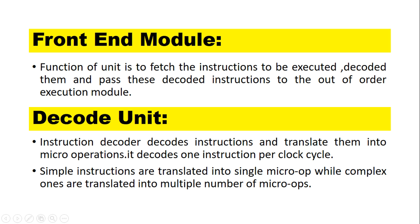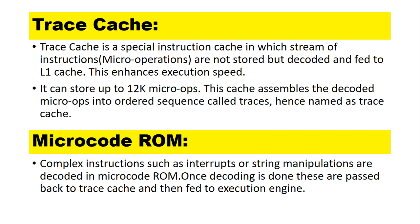Trace Cache is a special instruction cache in which a stream of instruction micro-operations are not stored, but decoded and fed to L1 cache. This enhances execution speed. It can store up to 12K micro-ops. This cache assembles the decoded micro-ops into an ordered sequence called traces, hence named Trace Cache.